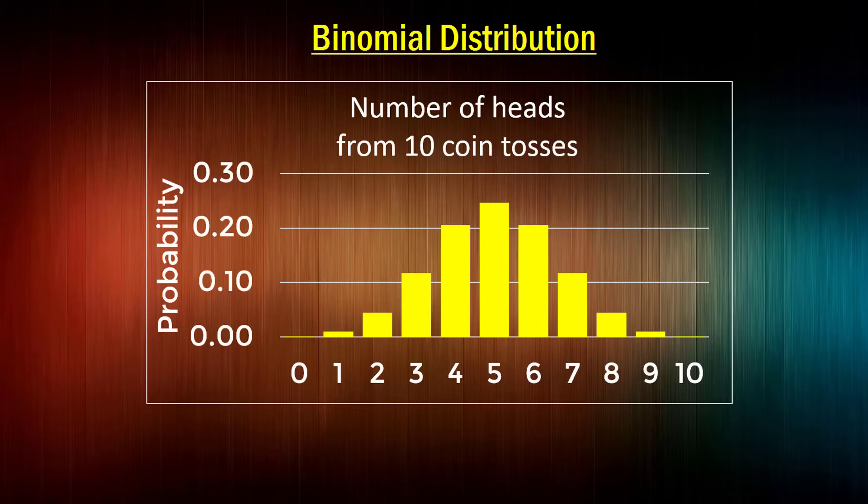Welcome to this series on probability distributions, where I'm going to be cracking open a whole bunch of distributions that are commonly used in statistics. The first cab off the ranks today is the binomial distribution and we're going to start here with the cliched but quite useful coin toss example. Think about tossing a coin 10 times. How many heads do you think you're going to get from those 10 coin tosses? Do you think you're likely to get 10 heads?